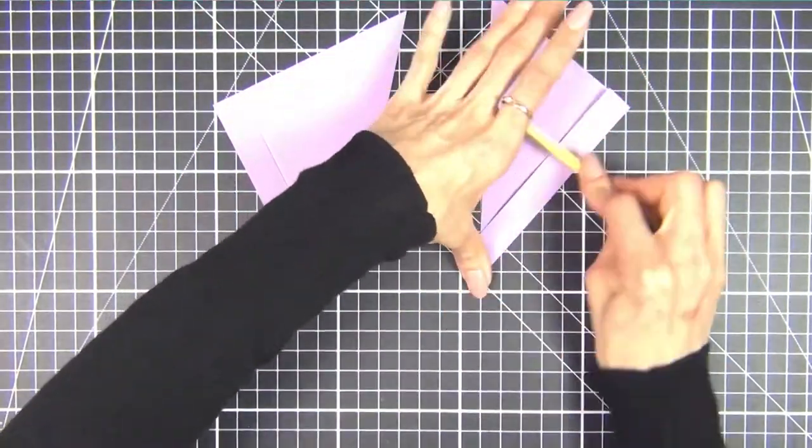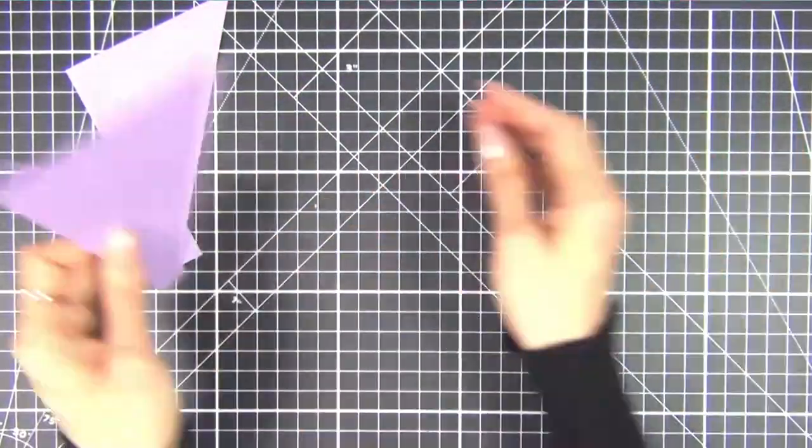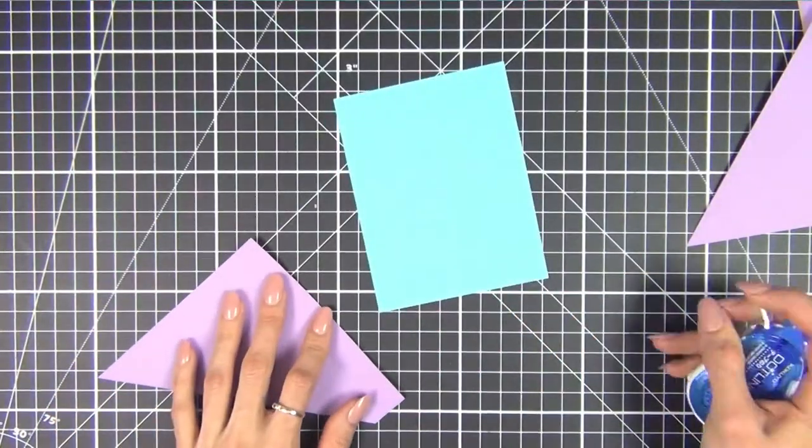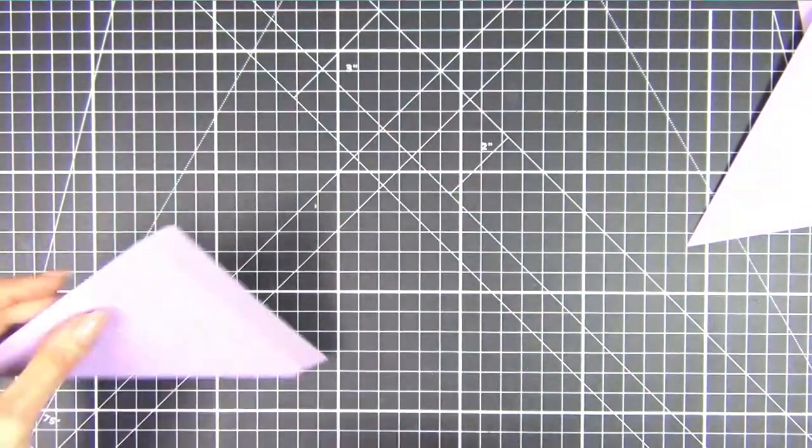Here I'm creasing the score lines making sure they're folded in the right direction because we're going to be adhering these to the back of a 4.25 x 5.5 inch card panel.